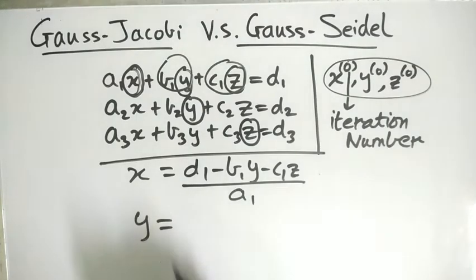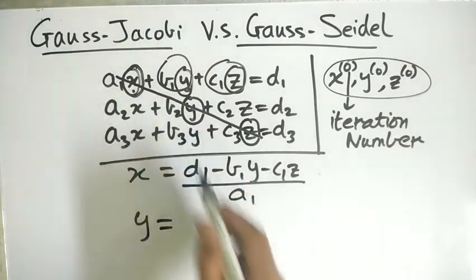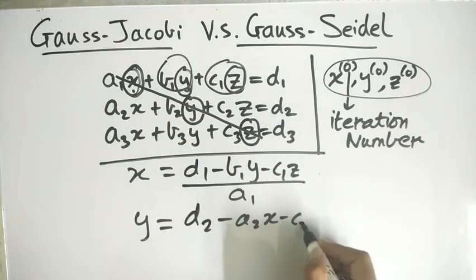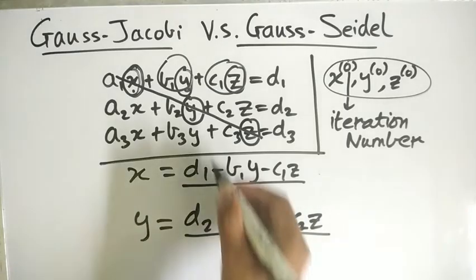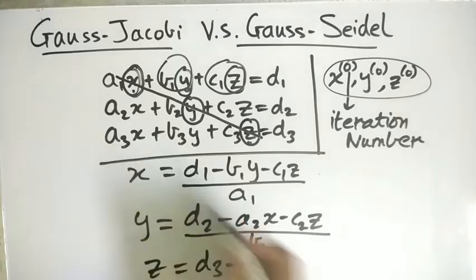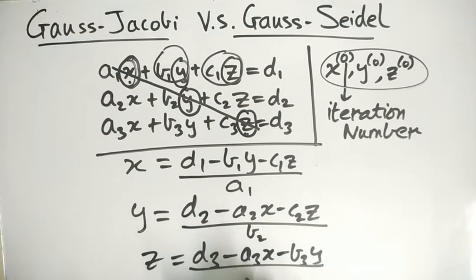Similarly for y from the second equation. This kind of diagonal: from the y, we have d2 minus a2x minus c2z divided by b2. And for z, from this equation, d3 minus a3x minus b3y divided by c3.